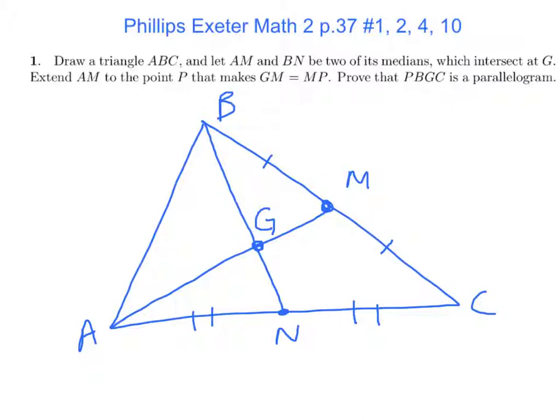Extend AM to the point P that makes GM equal to MP. Okay, so here's GM right here. We want to extend that out to make GM equal to MP. So let's extend this out. About right there, maybe. GM is equal to MP. Put my little tick marks there.